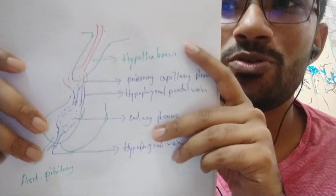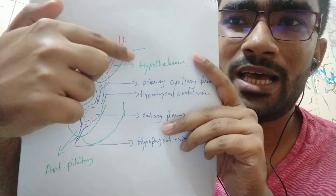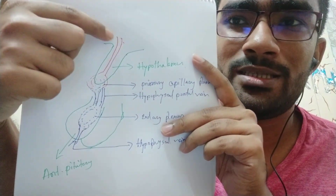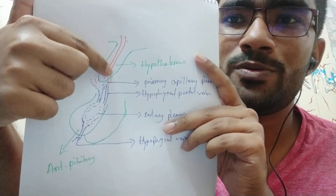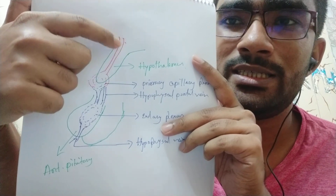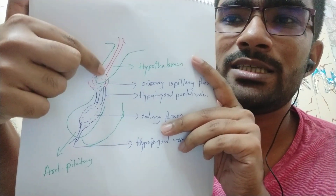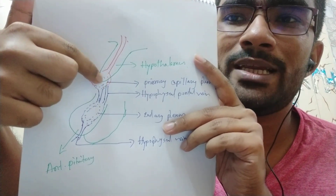This is the first set of capillaries, which is the key feature of the portal system structure.